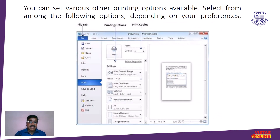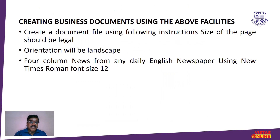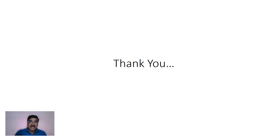You can set various printing properties in the settings: paper sizes, how the page number is displayed, and how many print copies you need. For creating a business document using the above facilities: create a document file with the following instructions — page size should be Legal, orientation Landscape, four-column news layout from the daily newspapers, font Times New Roman, font size 12. Thank you.